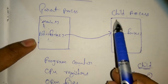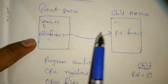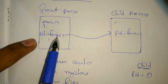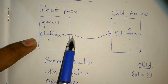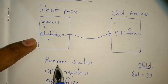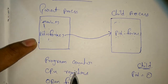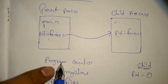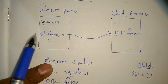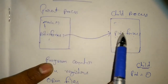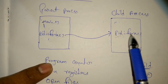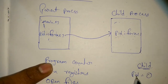In the child, execution does not start from the beginning of main — it starts from the fork call. Because when the parent was executing, the child is created at that point. Since the child shares the program counter, CPU registers, and open files, the next instruction to be executed is right after the fork call. So in the child, it starts executing from there. When fork is executed in the child, it returns 0.